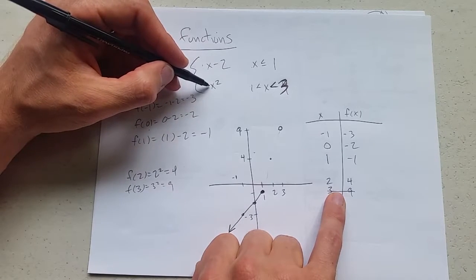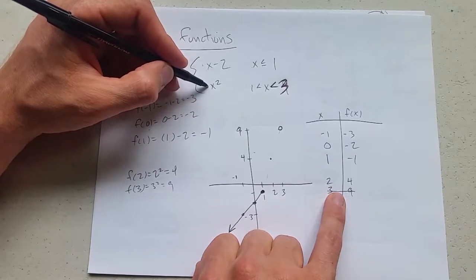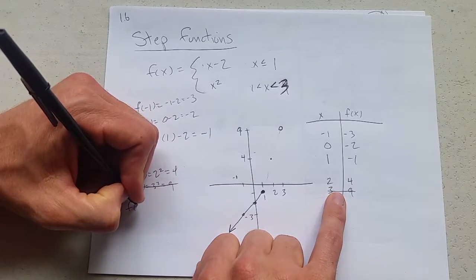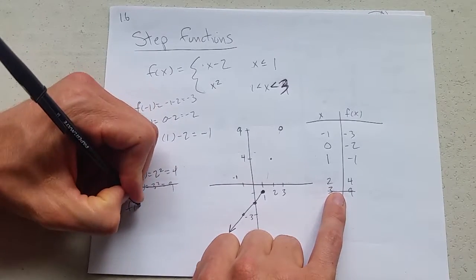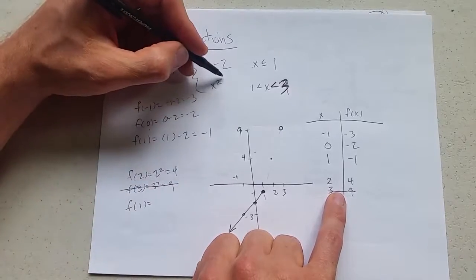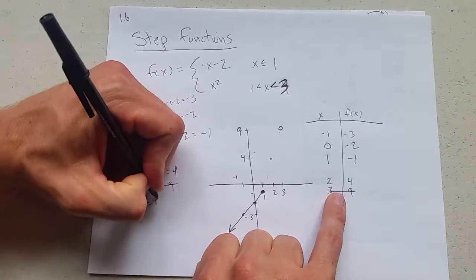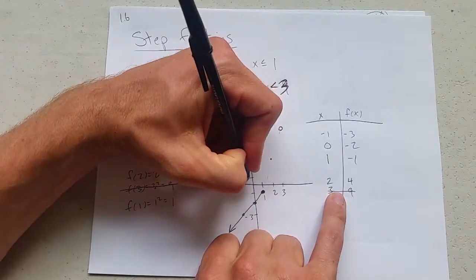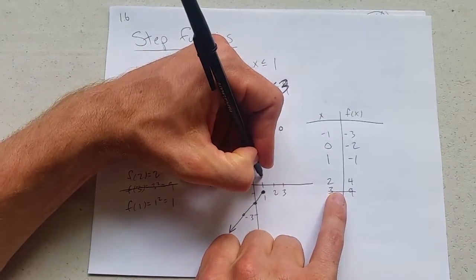If I plug in 1 here, this is not actually a point on the graph. This is not a point on the graph either. So I'm going to plug in 1. I'm going to use the wrong piece, which is piece 2. 1 squared is 1. So there is the point 1, 1.